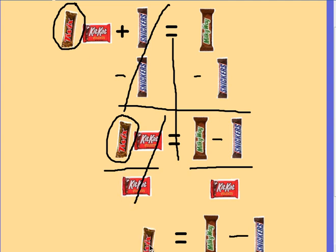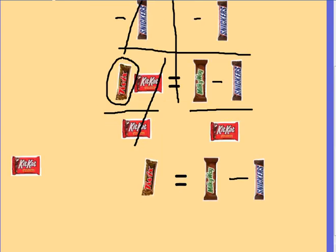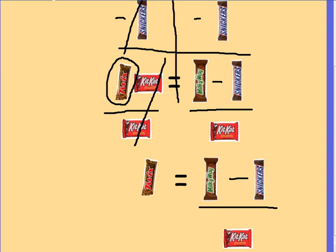And now, on the left-hand side, we are just left with the Twix. So, what we have done here is we've isolated our Twix, and we are left with Milky Way minus Snickers, all divided by a Kit Kat. This is what a Twix is equal to in this example. We're going to use this example as our guide today and relate our examples back to this one.